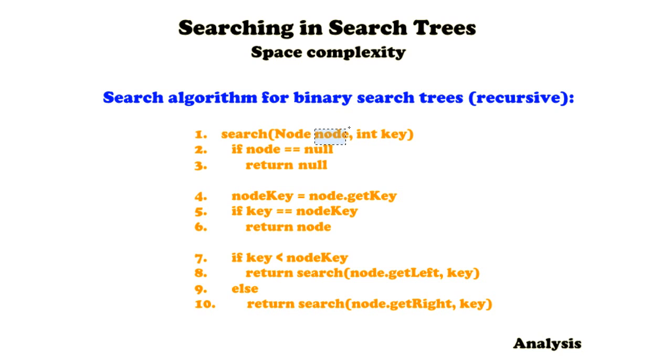Given is a node which, the first time the search method is called, can be the root, but furthermore this will be the node at which we're currently at. Besides, a key is given and this is the key for which you would like to search some node.